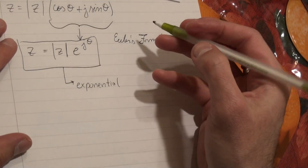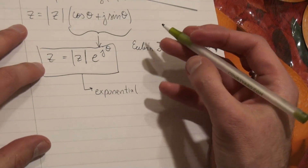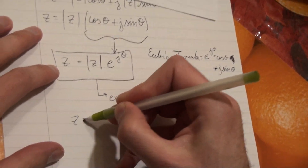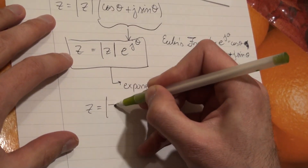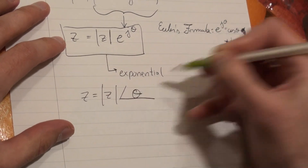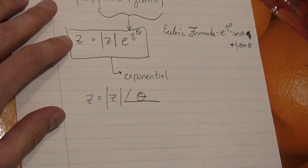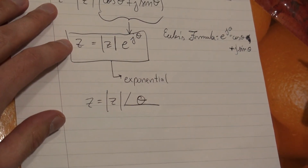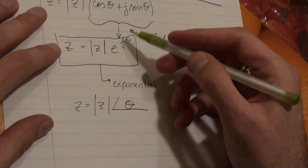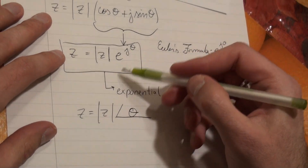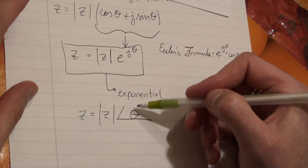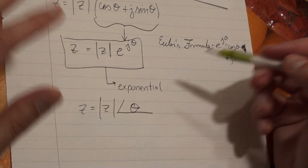A useful shorthand for exponential form is to take your magnitude, put the angle sign, and just put theta. This is called polar format. It's the same thing as exponential form — it's just a shorthand where we take out the e to the J and put theta. It's understood.